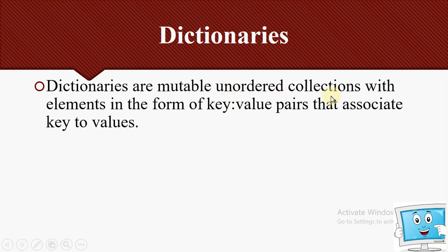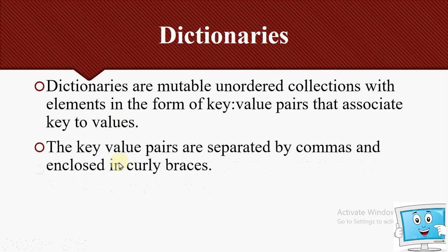Dictionaries are unordered because there is no order or indexing. The elements of the dictionary are in the form of key-value pairs. Key-value pairs are separated by commas and enclosed in curly braces — the entire dictionary is enclosed in curly braces and key-value pairs are separated by commas.